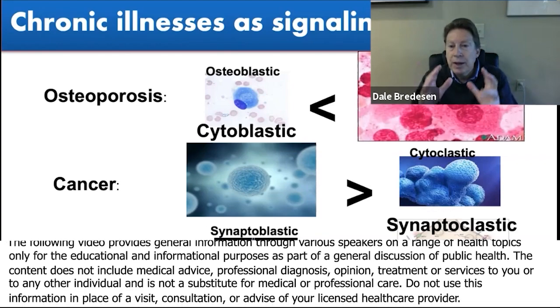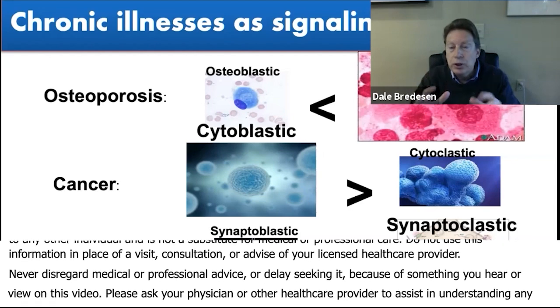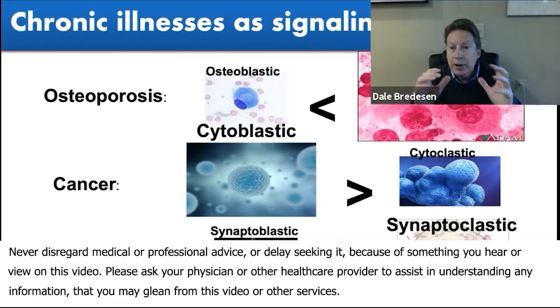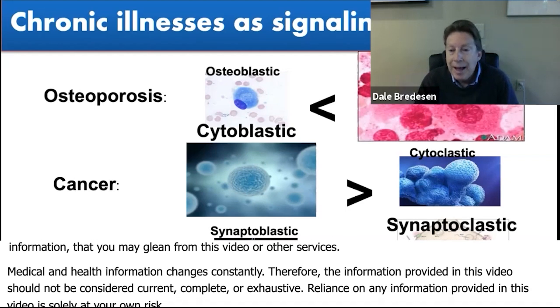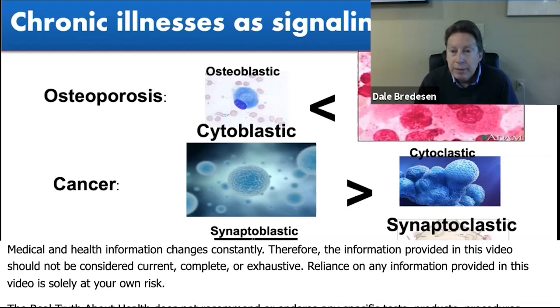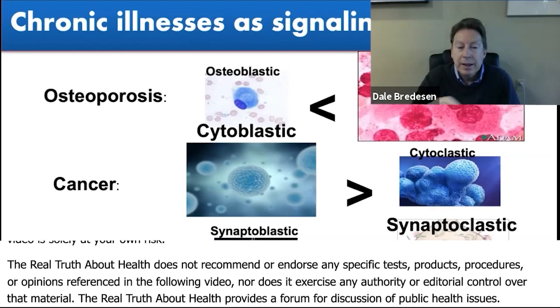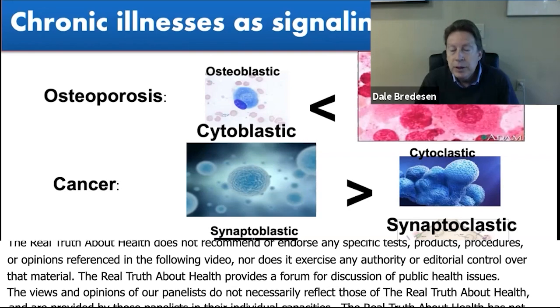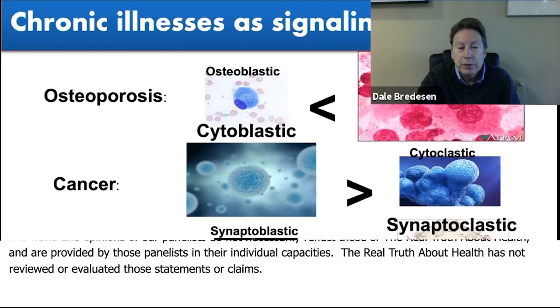There's a whole set of signals that are synaptoblastic, and they have to do with your trophic activity and your nutrition and your lack of inflammation and your energetics. On the other hand, there's a whole set of things that are synaptoclastic, and that has to do with inflammation and poor support and toxins. And when there is a mismatch between these for years, you end up with Alzheimer's disease.